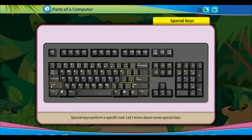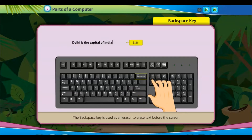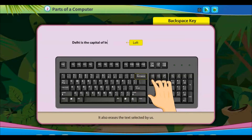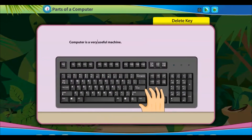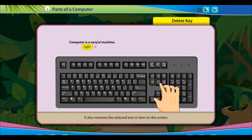Special keys perform a specific task. The backspace key is used as an eraser to erase text before the cursor. It also erases the text selected by us. The delete key also acts like an eraser — it erases text after the cursor and also removes selected text or items on the screen.